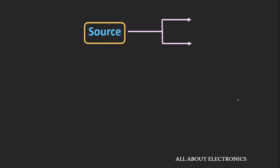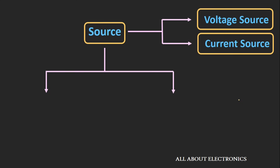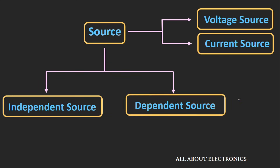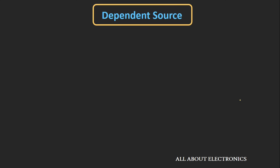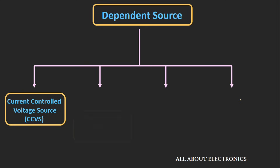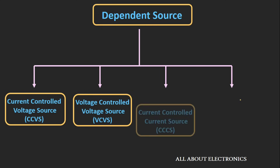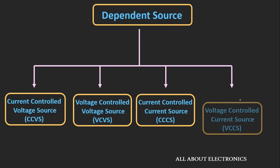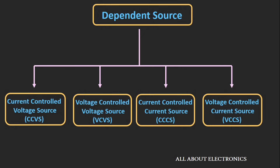Now let's summarize what we have seen today. We have seen two different kinds of sources: the independent source and the dependent source. The independent sources are the sources whose output value does not depend on any circuit parameters, while the dependent sources are the sources whose output value depends upon either voltage or current at some other part of the circuit. This dependent source can be classified into four categories: current-controlled voltage source, voltage-controlled voltage source, current-controlled current source, and voltage-controlled current source. We also saw a practical example for each of them.